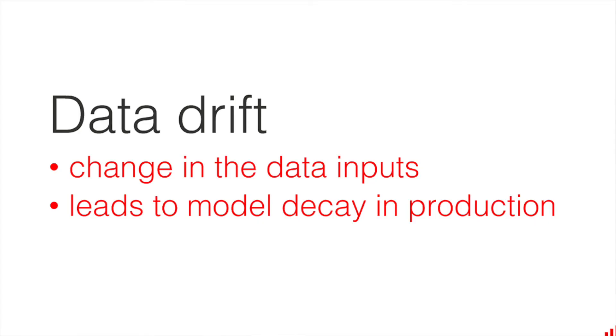Let's sum up. Data drift is a significant change in the input data that your model receives. When this happens we can see things like a shift in data distributions, and usually your model will need to be retrained — otherwise it will fail to perform on the new data regions.